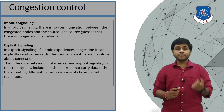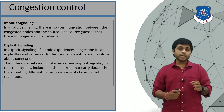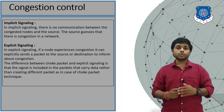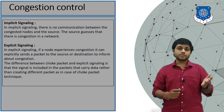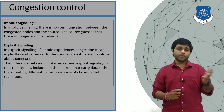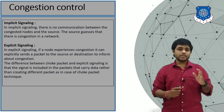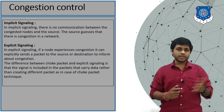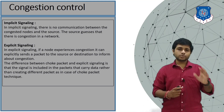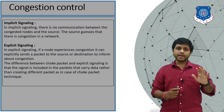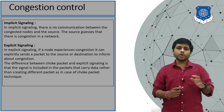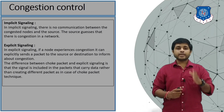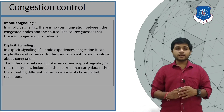The next type is implicit signaling. In implicit signaling, there is no direct communication between the congested node and the source. The source assumes there might be congestion in the network based on indirect signals, so it sends packets at a very low rate or sends packets after some delay.